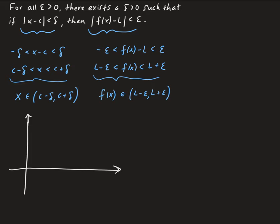Let's draw a function that we can work with — let's say our function has a hole in it. So that's the y-axis and the x-axis. c will be here on the x-axis, and l will be the corresponding y-value. So the limit of f of x as x approaches c is equal to l. Remember, the function doesn't need to be defined at that point for the limit to exist.